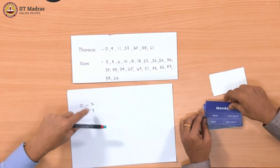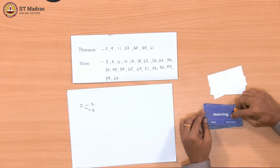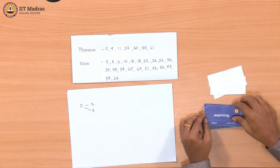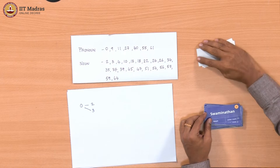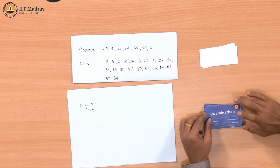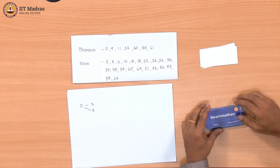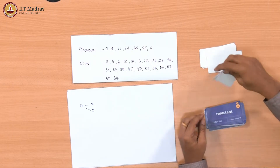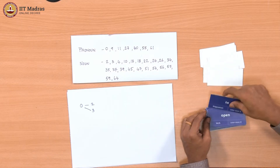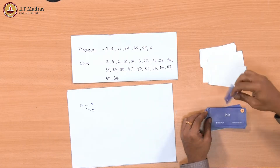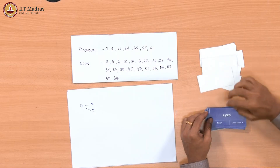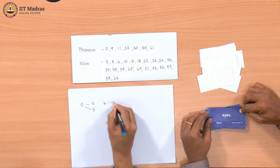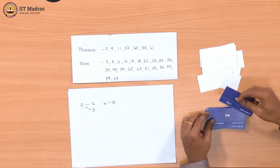Since this sentence ended, nothing from this sentence can connect to another sentence, because the sentence boundary is there. So we leave this — this part is over. Now we have node 4 which is Swaminathan again. 4 is connected by the verb 'was' to — his eyes — so 4 is connected to 10. And then again we reach a sentence boundary and the sentence is over.